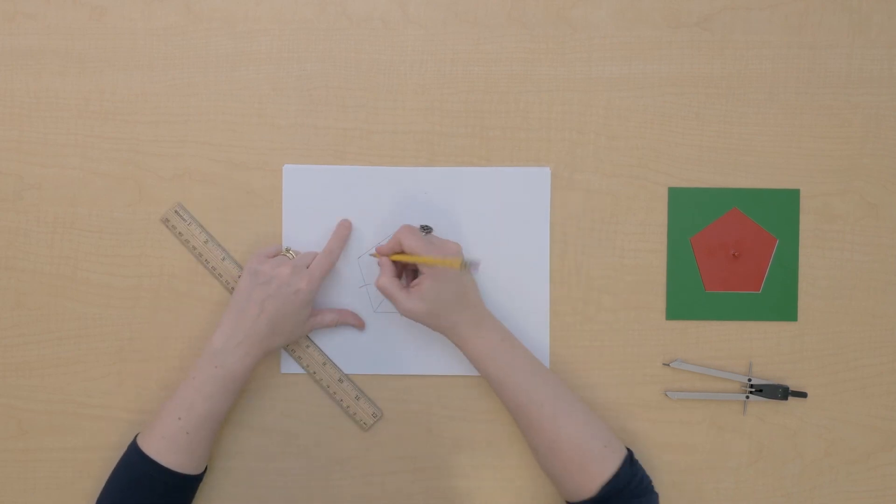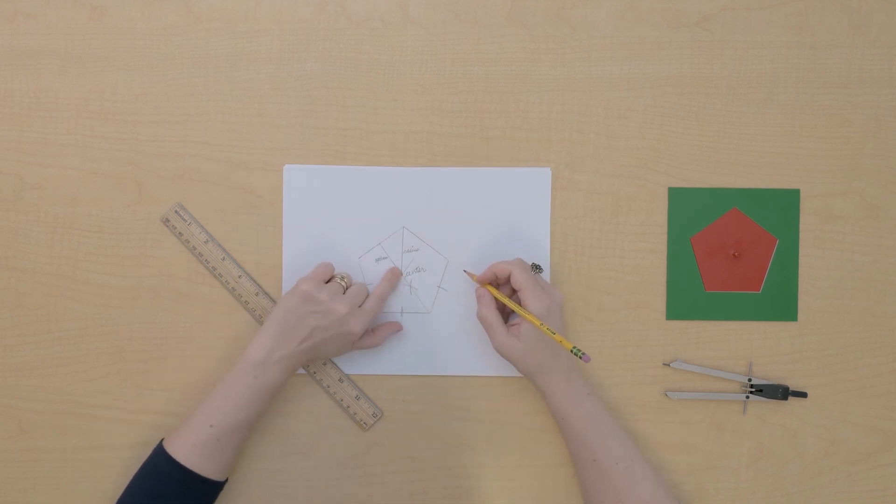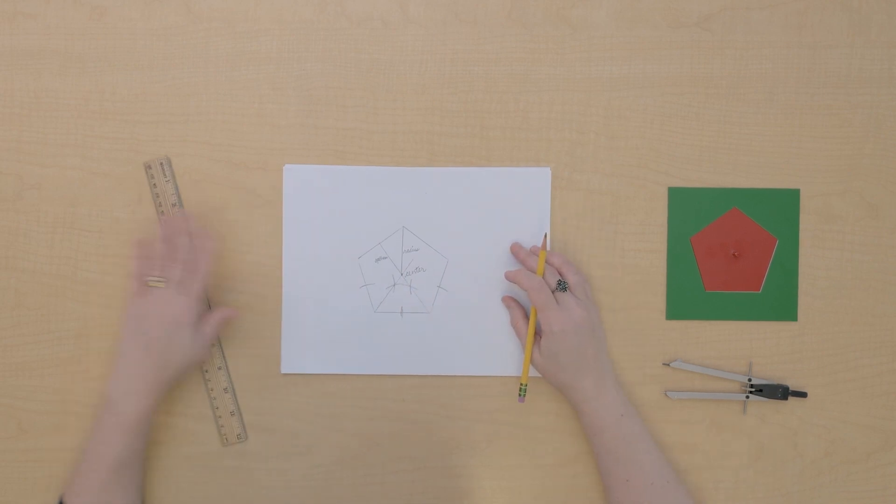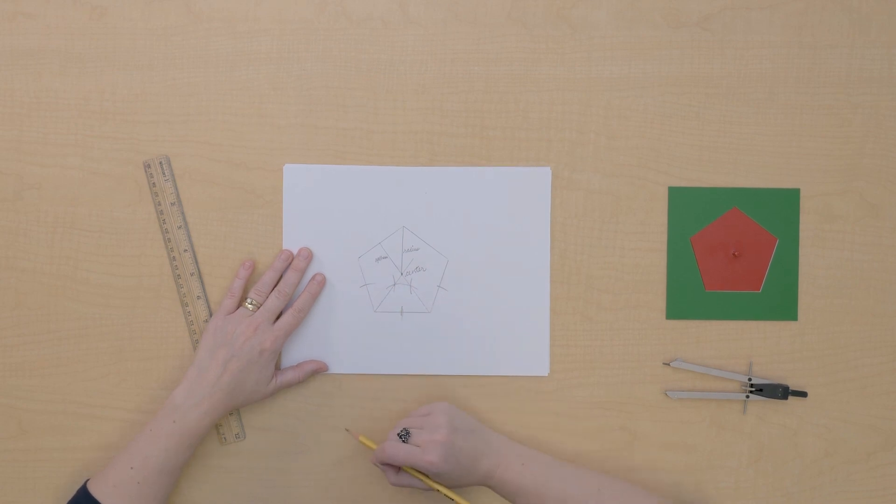This line segment is called an apothem. So we have an apothem, a radius, and the center. And of course we have all the other parts of polygons that we've talked about. The perimeter, we could draw perhaps the diagonal and some of the other parts.